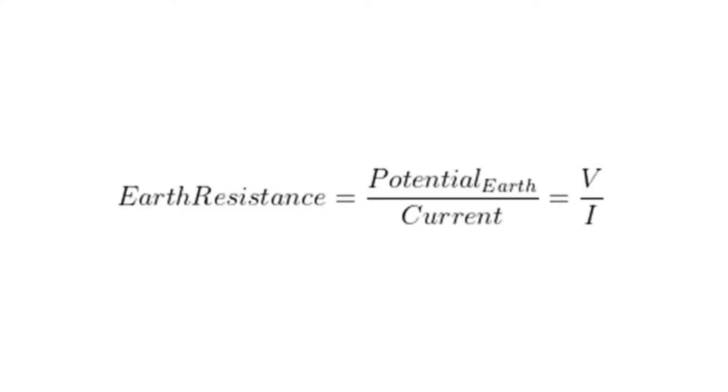When we talk about Earth resistance, we mean the resistance of the Earth electrode where the current flows into the ground. The Earth electrode is not a single point, as the resistance is distributed over the soil surrounding that point where the current flows.